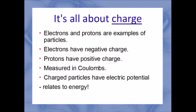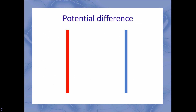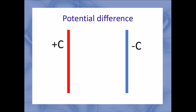Now the important part. Any charged particle can have something called an electric potential, and this is an energy-related concept. Imagine you have two straight rods, like this red one and this blue one. Let's not worry about what they're made of or how big they are — none of that matters for this explanation. All we need to know is that the rods are electrically charged.